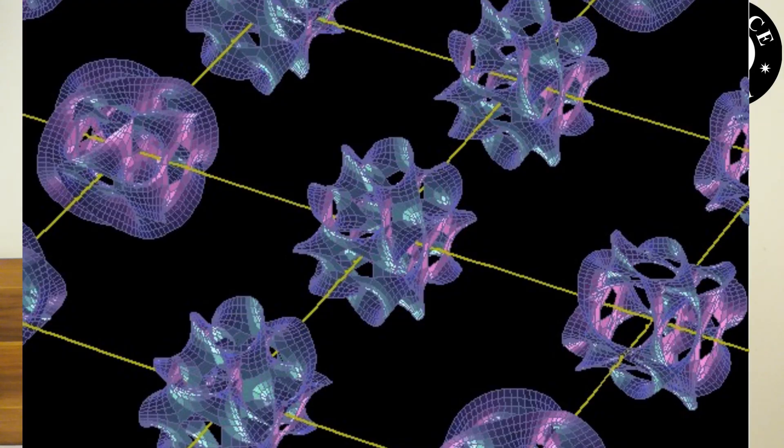The extra dimensions have compactified — that is the beautiful term: compactification. We know we have 4 dimensions, but in string theory the extra dimensions are compactified down to about 10^-35 meters — the Planck scale.